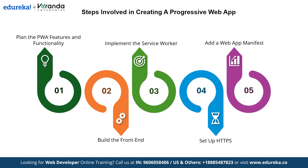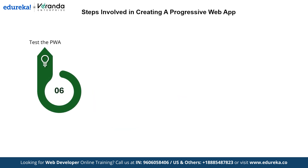In the next step, we add a web app manifest - a JSON file that contains metadata like the app's icon, name and color theme. This allows users to install the app on their devices, bridging the gap between a website and a native app. Once the foundational steps are complete, we move on to testing the progressive web app. This involves rigorously checking the app's performance, functionality and compatibility to ensure it works flawlessly across various devices and browsers.